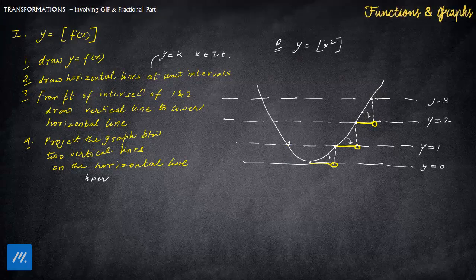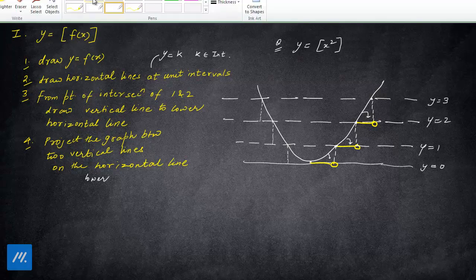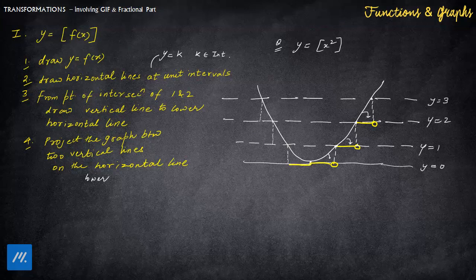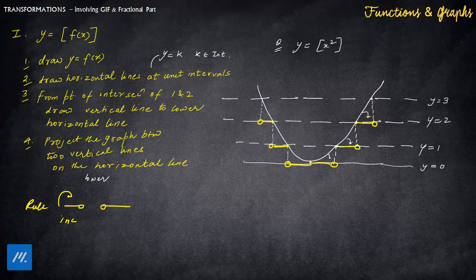Now let's see what will happen on the left-hand side — for x < 0, as x increases (becomes less negative), y decreases. So the open end will come on the left-hand side in that region. The rule is: if the graph is increasing, the open circle goes on the right-hand side; if the graph is decreasing, the open circle goes on the left-hand side. For x > 0, as x increases, y also increases, so the open end is on the right. For x < 0, y is decreasing, so open circle is on the left. This is the graph of y = GIF(x²).